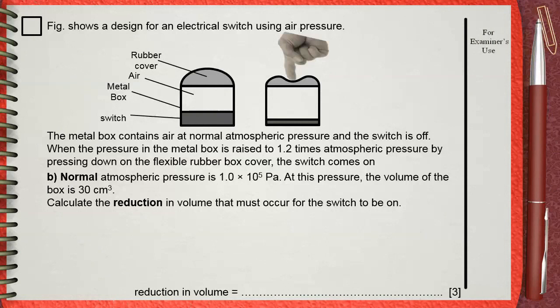Question B. Normal atmospheric pressure is 1.0 times 10 power 5 pascals. At this pressure, the volume of the box is 30 centimeters cube. Calculate the reduction in volume that must occur for the switch to be on.